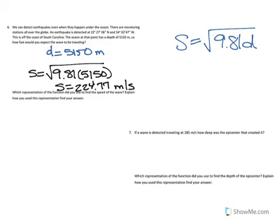When we use this equation, we just use the general representation of the problem to solve. Now, number seven says if a wave is detected traveling at 185 meters per second, how deep was the epicenter that created it? So here we have a couple of options. One thing we can do is recognize that our speed here is 185 meters per second. So we can solve this simply by plugging in 185 for s and then solving this using some of the methods that we learned in Unit 5.